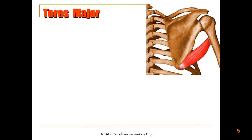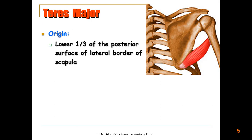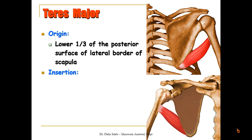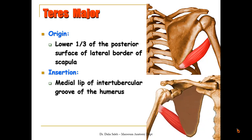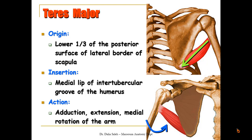The teres major muscle takes its origin from the lower third of the posterior surface of the lateral border of the scapula, and inserts into the medial lip of the intertubercular groove of the humerus. It helps the latissimus dorsi in its action, leading to adduction, extension, and medial rotation of the arm — as if you are folding your arms behind your back.